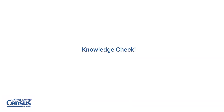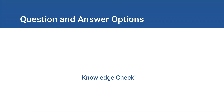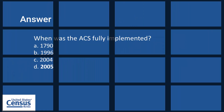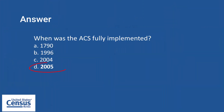It's time for a knowledge check. When was the ACS fully implemented? Was it 1790, 1996, 2004, or 2005? If you said 2005, you are correct.